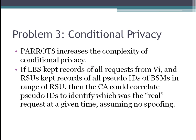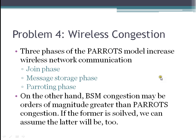Third — and this is maybe the toughest one — PARRITS increases the complexity of conditional privacy. In order to find out where vehicle VI really was at a certain point in time, the LBS would have to keep records of the requests from VI, and the RSUs would have to keep records of the pseudo-IDs of the BSMs in range of the RSU. That's a lot of data to keep track of, but you could still maintain conditional privacy, assuming there's no spoofing and the certificate authority is not breached. Finally, there's the issue of wireless congestion — three out of four phases do increase congestion. However, compared to basic safety message congestion, it's really an order of magnitude less. So if the basic safety message problem is solved, probably the PARRITS problem will be solved too.